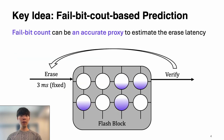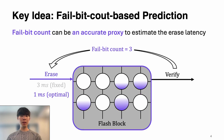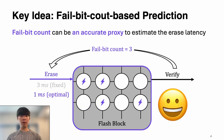To avoid using fixed latency, we use fail bit count. After a verification step, we count the number of un-erased bit lines called fail bits. We found that this value is highly correlated with optimal erase latency. So, by applying optimal latency for the next erase, we can minimize negative impacts of erase operations.